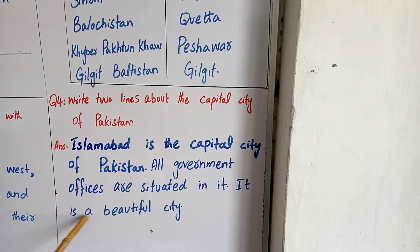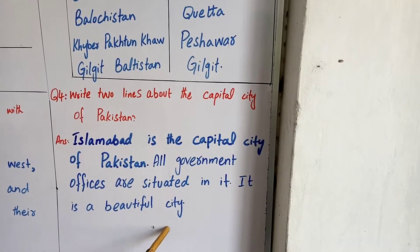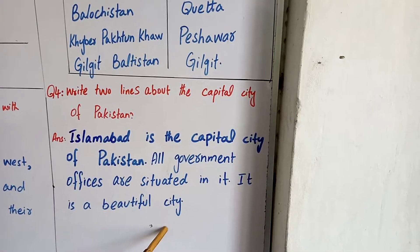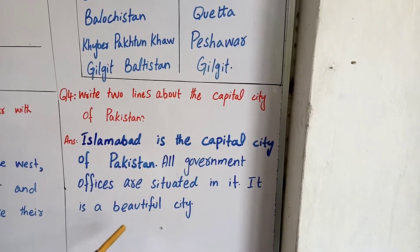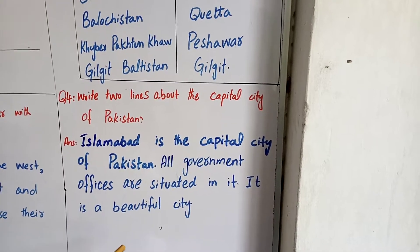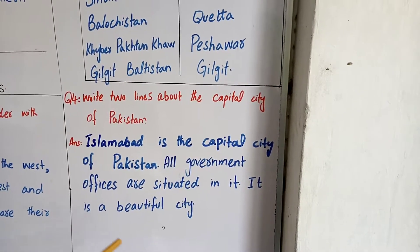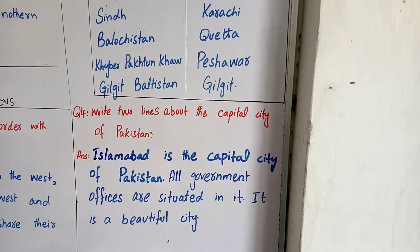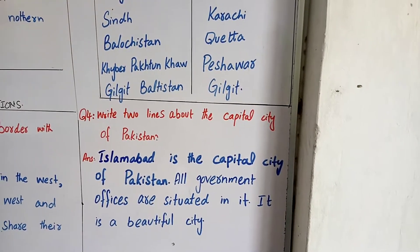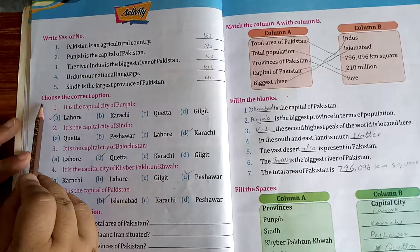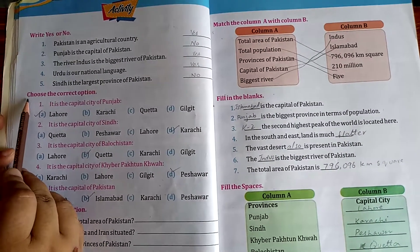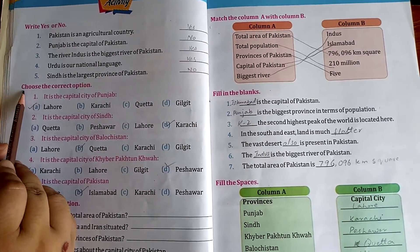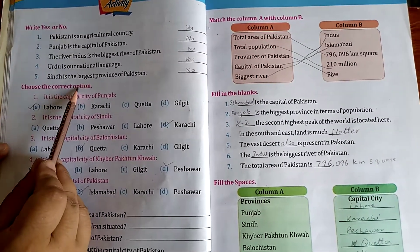It is a beautiful city. These are the question and answers. Now we will solve the book exercise. First we have to choose the correct options. Here we have questions and options for every question.